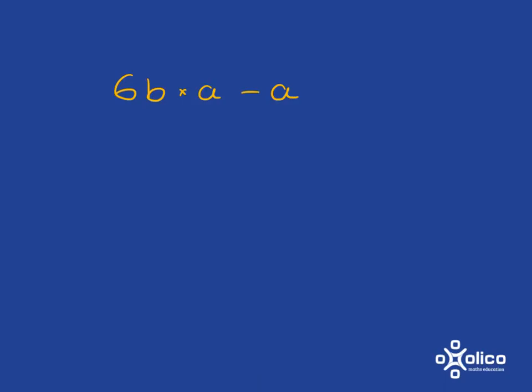If you have something like 6b times a minus a, this 6b times a needs to be done first. Now you can't actually do very much with that, except in algebra we tend not to write the multiplication sign. So we could just write that as 6ba minus a.